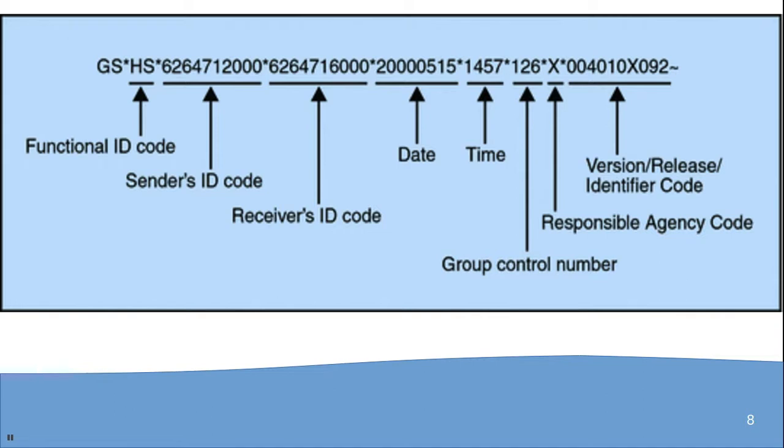For the GS segment: GS01 is the functional identifier code, GS02 is the sender ID, GS03 is the receiver ID, GS04 is the date, GS05 is the time, GS06 is the group control number, GS07 is the responsible agency code, and GS08 is the version/release identifier code. These are the envelope segments used for EDI transactions.